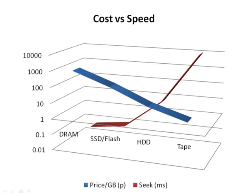This brings us to the cost versus speed comparison for these different devices. DRAM is clearly the most expensive but the fastest, with the lowest seek time. Flash is still pretty expensive and pretty fast. Hard disks are getting pretty cheap but have a much bigger speed delay. Tape is cheap as chips but very slow. Note that the scale shown is logarithmic — for DRAM we're in fractions of a millisecond of seek time, for hard drives we may be up to around 10 milliseconds, and for tape we're certainly in tens of thousands of milliseconds.